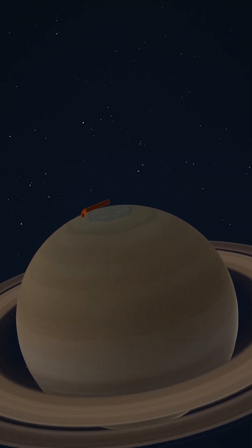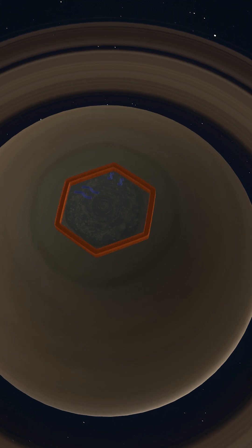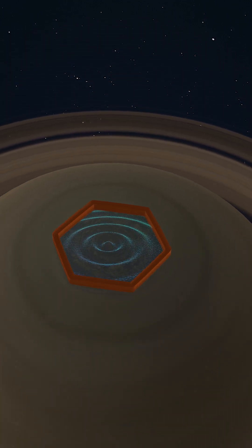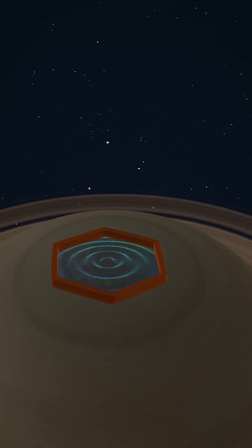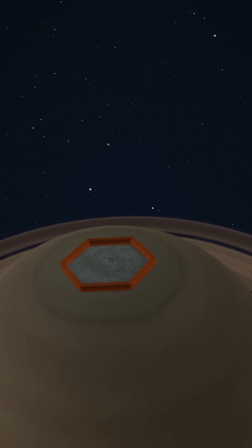This creates what's called a standing wave pattern, like the edges of the storm bouncing back on themselves, that naturally form six sides. Think of it like ripples in water bouncing back and forth between fixed boundaries. Except here, the boundaries are created by the winds themselves.